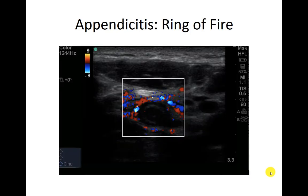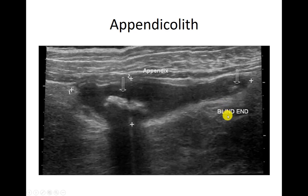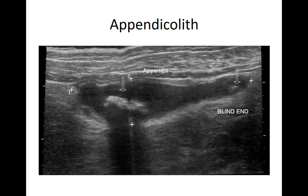Another sign is hyperemia — sometimes called the ring of fire. Hyperemia would imply that there's some inflammation in the area. Here is the actual appendix and all the vascularity surrounding it. Here's an example of an appendicolith — just like gallstones, these are hyperechoic structures with shadowing behind them. We have this blind-ended pouch and then this white thing with shadowing. One key with appendicitis is looking all the way to the tip, since appendicoliths often live at the very tip. There's also tip appendicitis, where just the end of the appendix is inflamed.